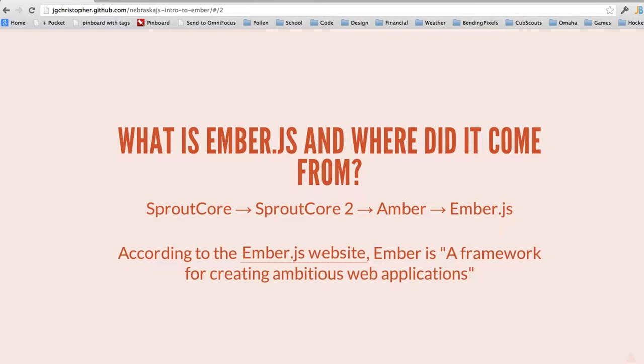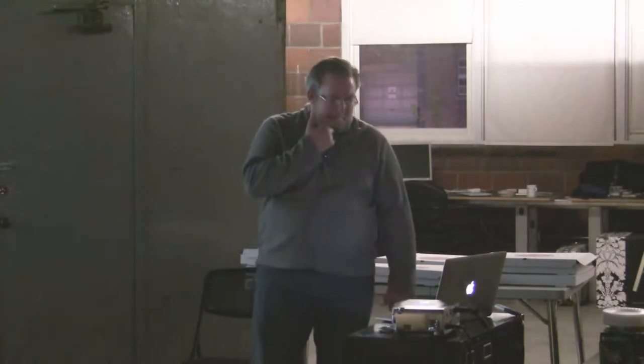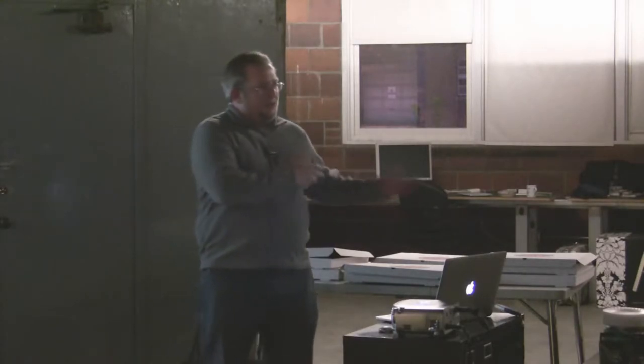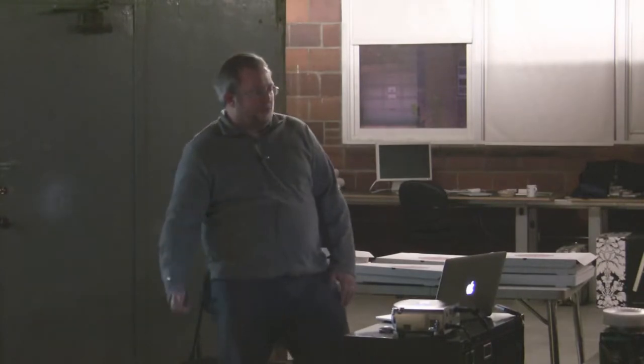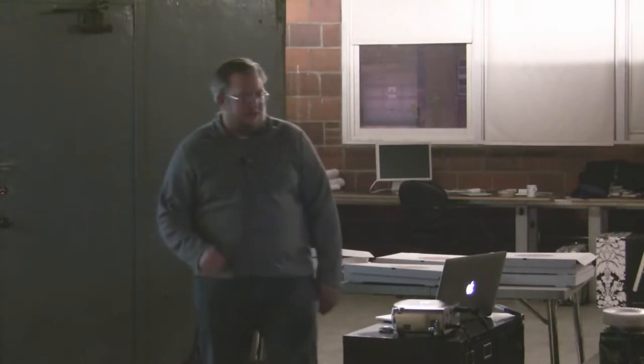We'll talk about what EmberJS is and where it came from. MobileMe came out several years ago, and at the same time they introduced a JavaScript framework called SproutCore. SproutCore was mainly a native widget library for JavaScript — if you went to MobileMe you could see a calendar that looked like the Mac calendar. Yehuda Katz got involved and they started writing SproutCore 2, which was going to morph into more of a web application framework. He then changed the name to Ember because people on SproutCore 1 looked at SproutCore 2 and said, this is not the same thing. And then Ember became Ember.js, which it is today — about a two-year process starting around 2011. According to the EmberJS website, it's a framework for creating ambitious web apps.